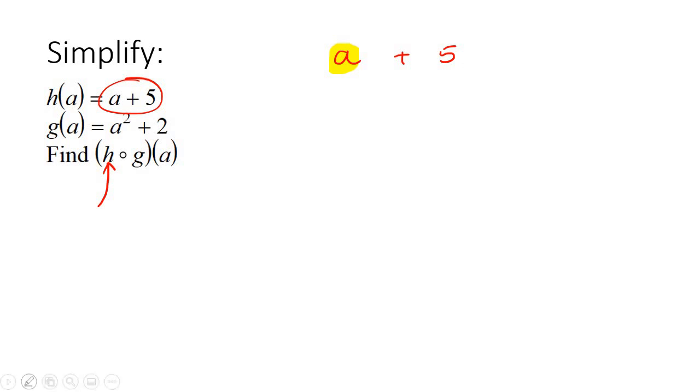Now you're going to go to g, whatever g is. There it is. And you're just going to put that inside that one. So you're going to have a squared plus 2. See what we've just done there? We've just replaced and then we're going to have plus 5. So we've replaced this a with g.